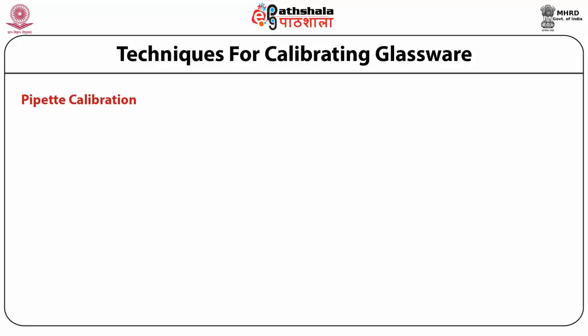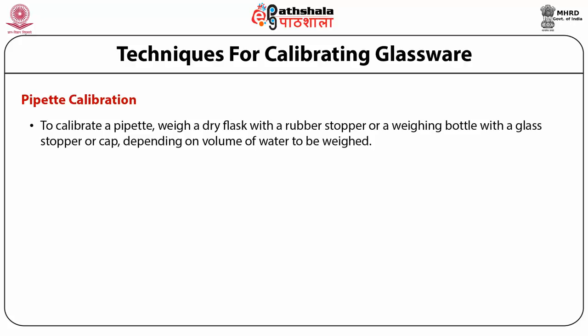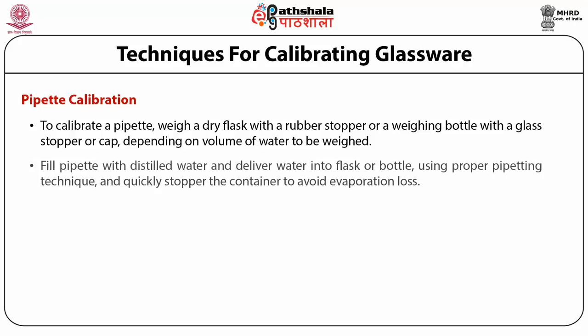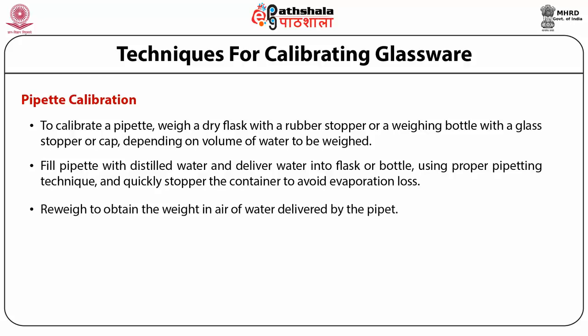For pipette calibration, weigh a dry flask with a rubber stopper, or a weighing bottle with a glass stopper or cap, depending on the volume of water to be weighed. Fill the pipette with distilled water and deliver the water into the flask or bottle using proper pipette technique, then quickly stopper the container to avoid evaporation loss. Reweigh to obtain the weight in air of water delivered by the pipette.